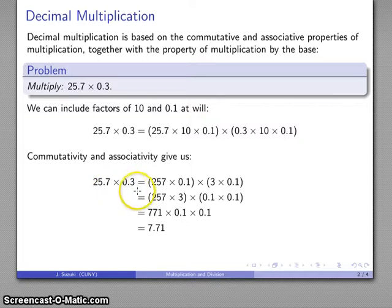To make this a whole number, I had to multiply by 10. So I multiplied by 10 and by 10. So I have to divide by 10 and by 10. And so I do the product 257 times 3. And then I place the decimal point by restoring those factors of 1/10 that I dropped out.